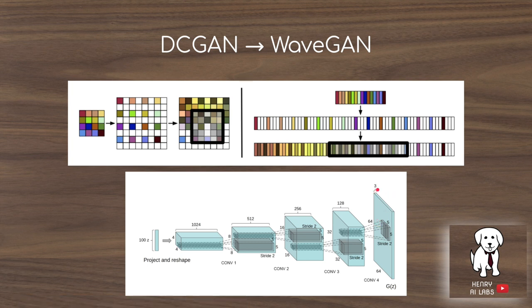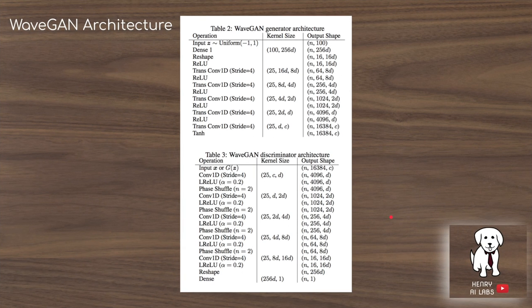In waveGAN, the big idea is actually quite simple: they use a similar transposed convolution operation, but it's one-dimensional. They take a series of sampled values from a waveform — analogous to a feature map in the image case — and stretch it out into a 1D structure to perform the upsampling convolution.